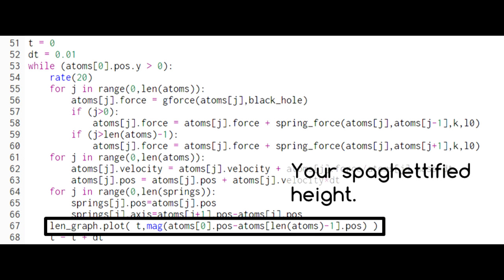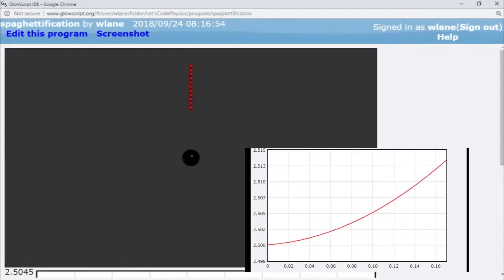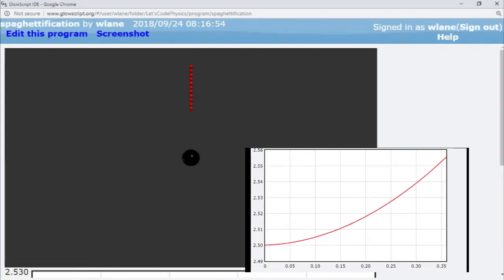For fun, we'll also graph the length of this human body as it falls into the black hole. The resulting animation shows the body falling into the black hole.